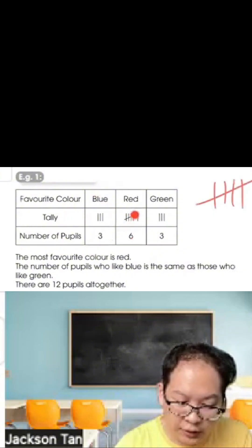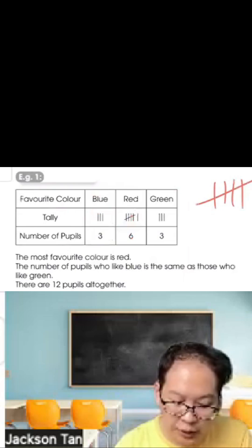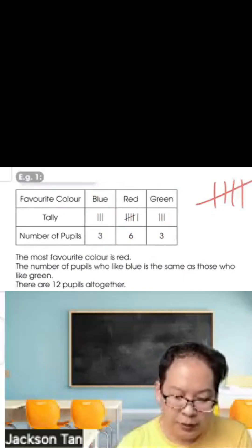So the most favorite color is red. The number of people who like blue is the same as those who like green. There are 12 people all together, 3 plus 6 plus 3 is 12.